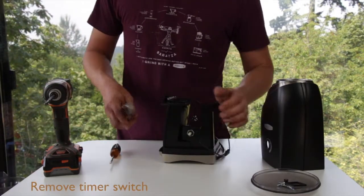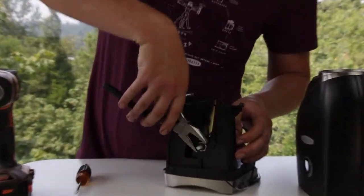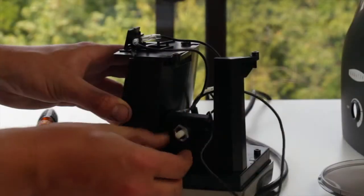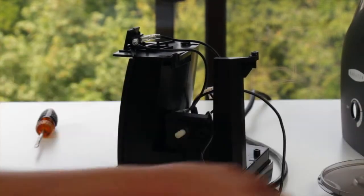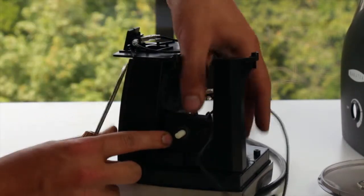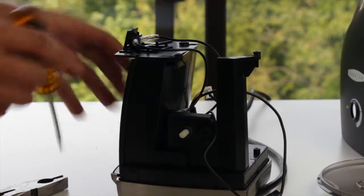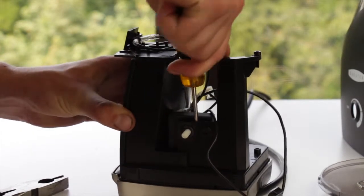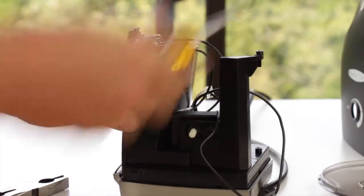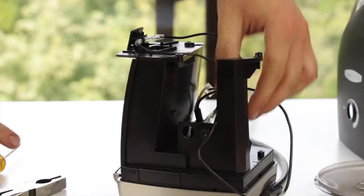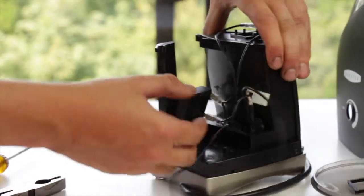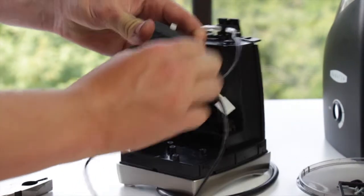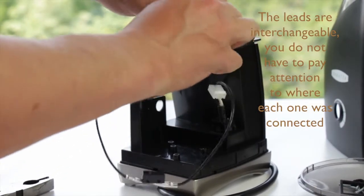The timer switch must come off next. There's a 5 eighths nut holding the timer switch on to the chassis. You can either use a 5 eighths socket or simply a pair of pliers. The nut is not on very tight. With the nut removed, we can get the timer switch out. It can be difficult to get out with just your fingers, so I recommend using your flathead screwdriver as a wedge between the switch and the chassis and popping it out. Once the switch is removed from the chassis, we can unplug the two leads going to the back of the switch. It doesn't matter which one goes where when we're putting it back together, so don't worry about that.